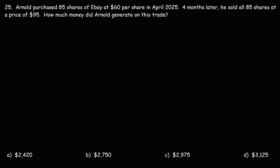Number 25. Arnold purchased 85 shares of eBay at $60 per share in April 2025. Four months later, he sold all 85 shares at a price of $95. How much money did Arnold generate on his trade?